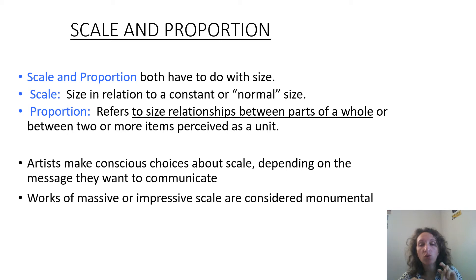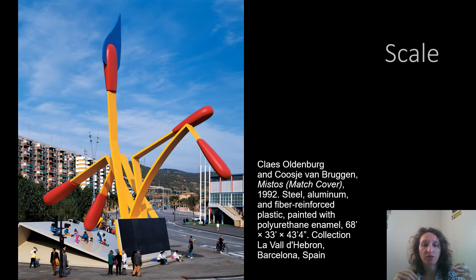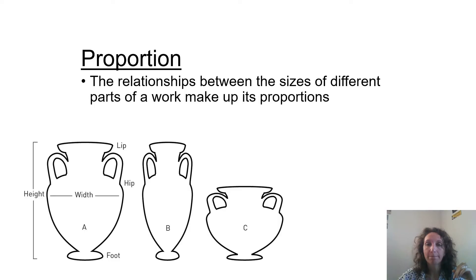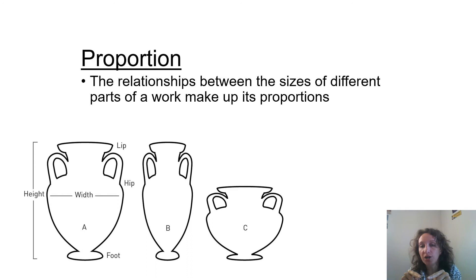Scale and proportion sound similar and both have to do with size, but there is a clear difference between the two. Scale is something in relation to normal size — so Claes Oldenburg's giant matchbook here is obviously way out of scale for its surroundings. It's enormous; matchbooks are usually really tiny. Proportion has to do with the size of parts of a whole. So if I had really enormous hands, they would be out of proportion for my body — not out of scale, because scale is a whole object in relation to its environment, whereas proportion is parts of one object or image. If you have any questions about this, email me.